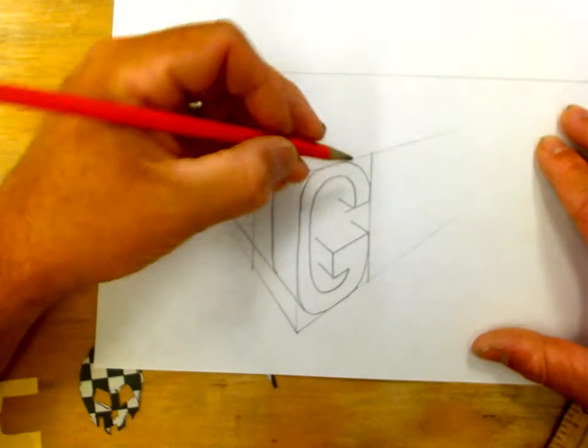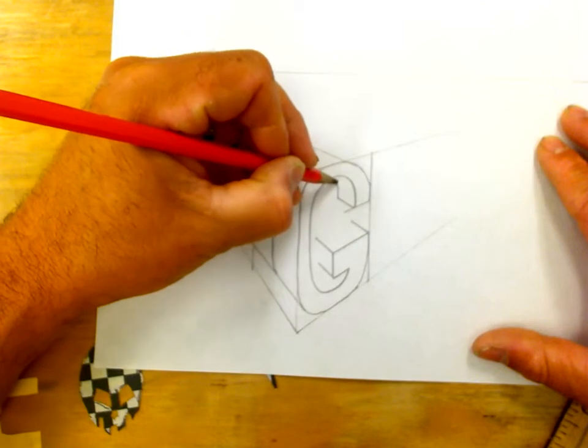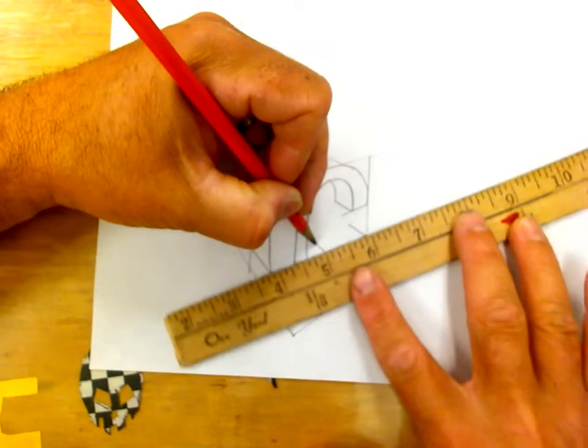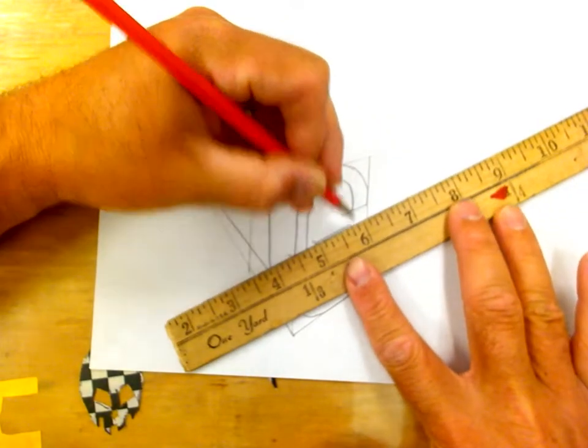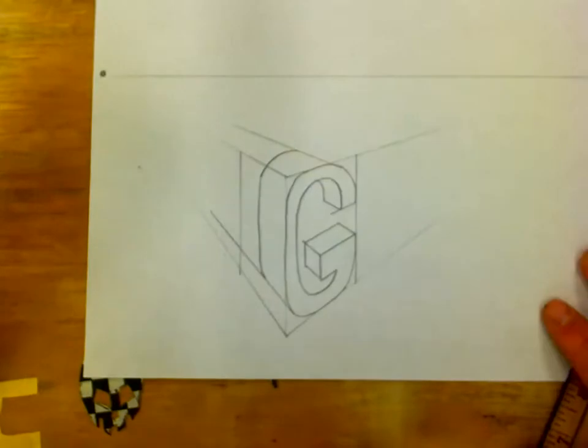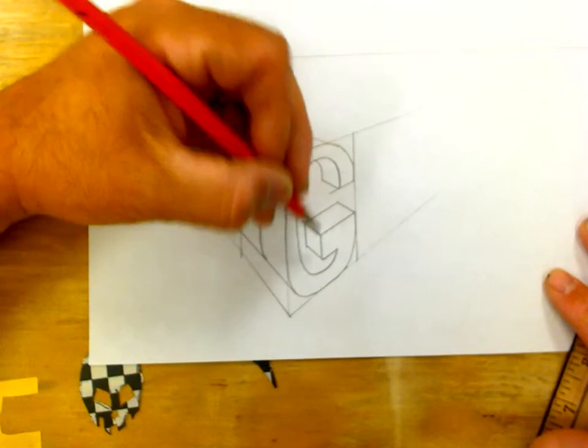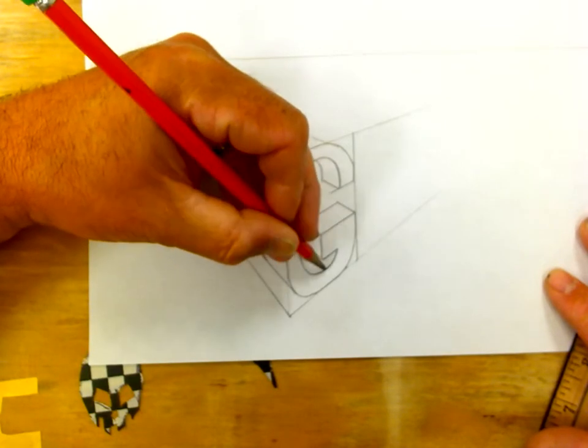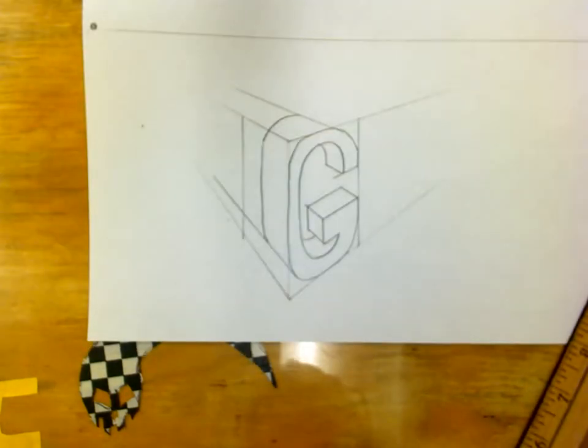It starts to curve. Curve up. Curve up. Vanishing point. Vanishing point. Now, this is the part everybody forgets. The bottom part right here. So, just kind of curve to match that one. G's done, G.